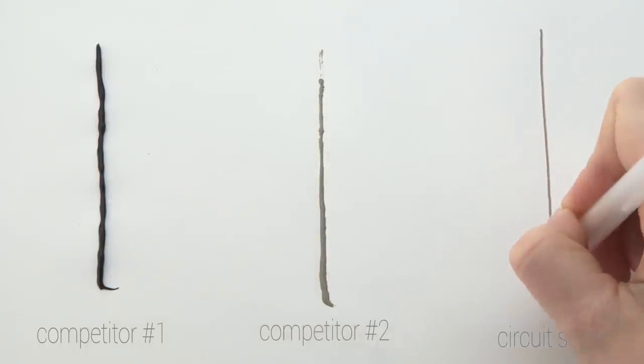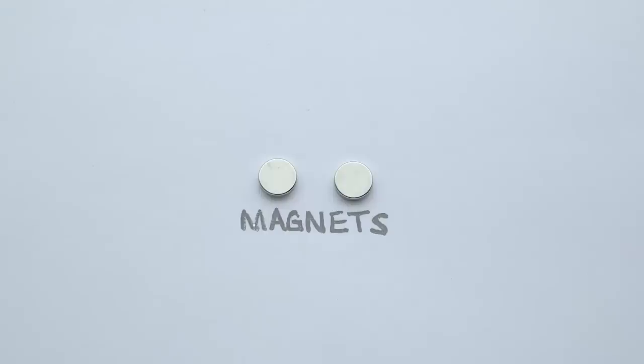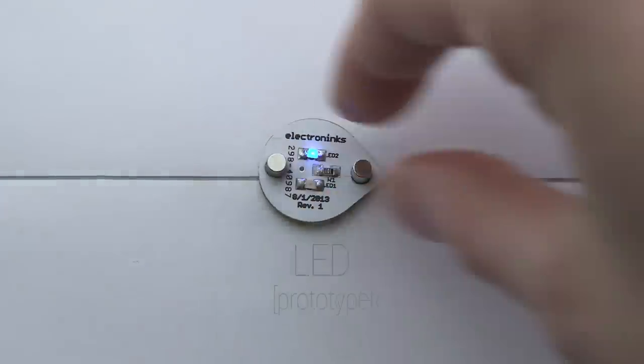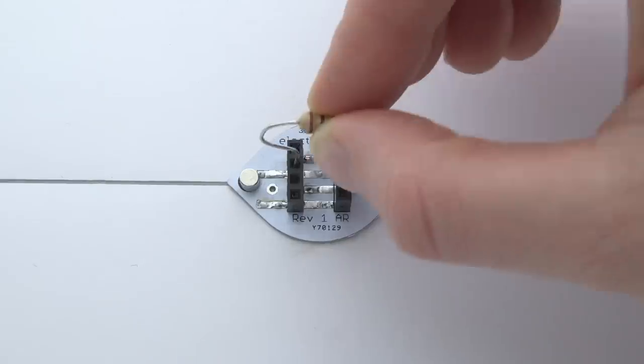Circuitscribe allows you to create low-cost, high-quality electronics instantly. We've also developed a variety of magnetic components that snap right into your circuits. No gluing, no soldering, just plug and play.